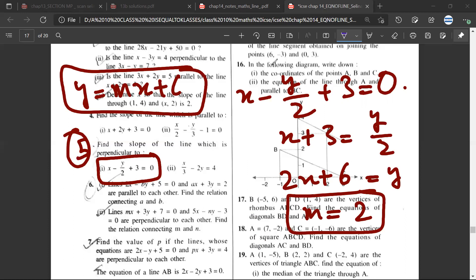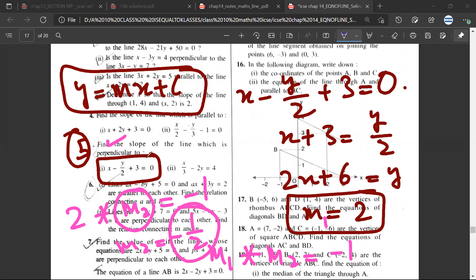So the slope is 2. Now I need to find perpendicular. Perpendicular means the product of the slopes equals minus 1. If you multiply the two slopes, the product should equal minus 1.